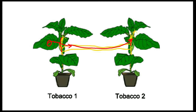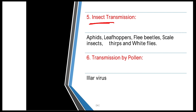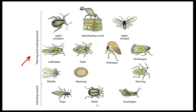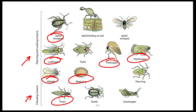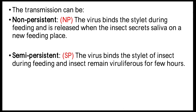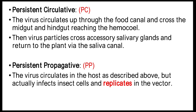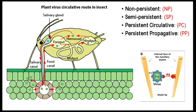Insect transmission — many insects such as piercing and sucking insects or chewing insects like aphid, leafhopper, whitefly, mealybug, treehopper, planthopper, thrips, beetle — through all of these, plant virus transmits from infected to healthy plant. The insect-virus relationship is of four types: non-persistent, semi-persistent, persistent circulative, and persistent propagative. This topic is very important and frequently appears in DRF, SRF, and NET exams.